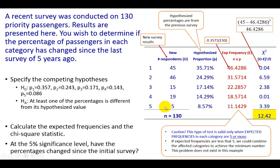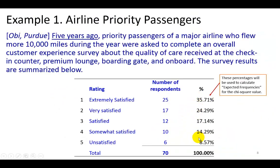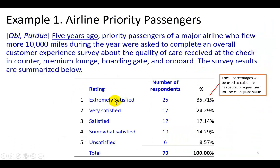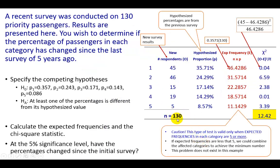The statement of hypothesis is that the proportional responses are going to be the same as they were previously. We're going to use those benchmark percentages to calculate the expected frequencies. If the proportional responses have not changed, then 35.71% of this new sample of 130 — which comes out to about 46.43 — would say they are extremely satisfied. The unsatisfied expected count would be 8.57% of 130, which gives 11.14. This red column consists of the expected frequencies determined by multiplying the benchmark percentages by the sample size.